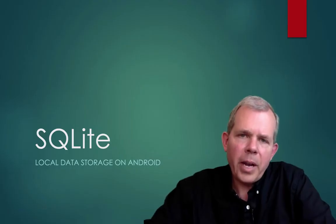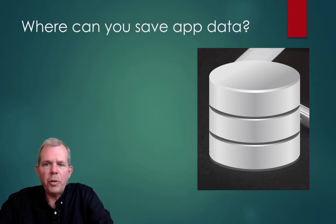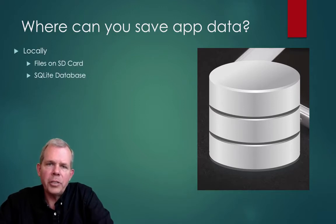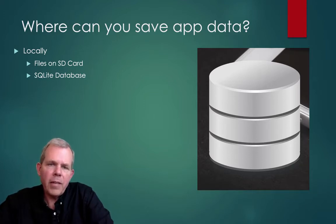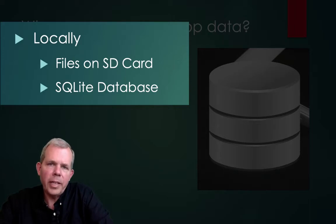We're going to create an application that will demonstrate everything you need to know about SQLite. When you're designing an app, where would you save your data? You're collecting names, products, locations — whatever it is you're collecting, you want to be able to save it somewhere. Your first choice might be locally — you could save things to a text file on a local directory or SD card, or as we'll show in this tutorial, how to save to the SQLite database.